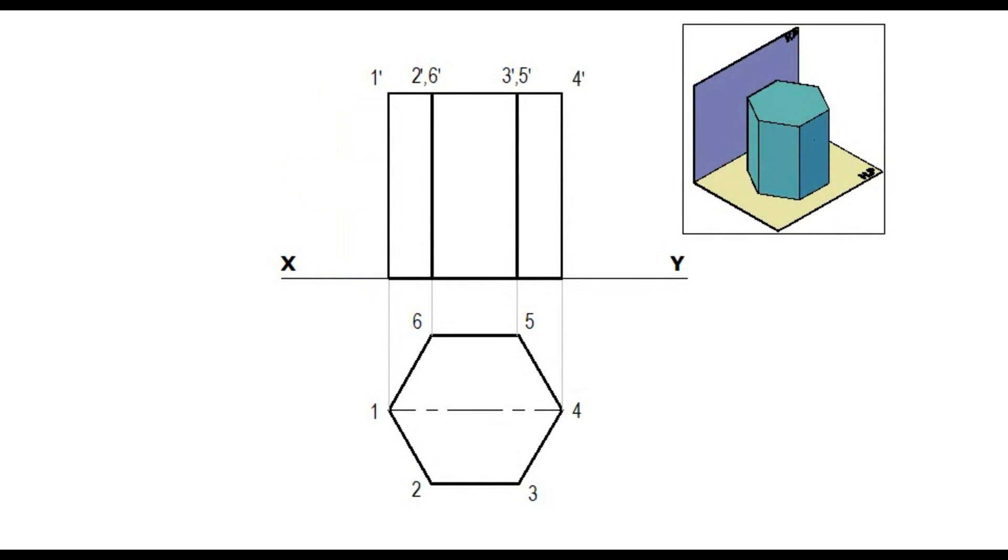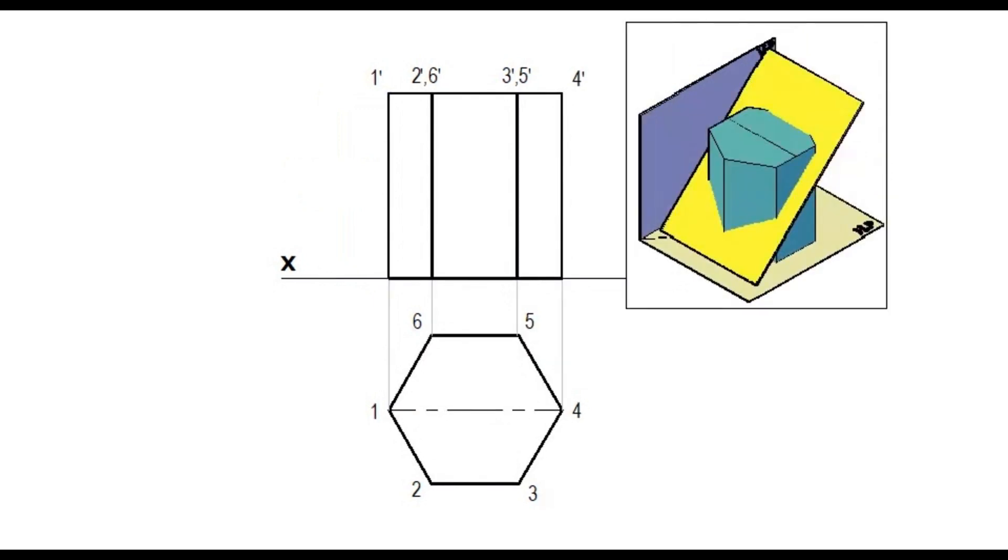For sectioning, the cutting plane or sectional plane is perpendicular to VP and inclined to HP. When cutting plane is perpendicular to VP, sectioning of the solid must be done in the elevation.